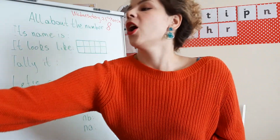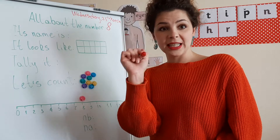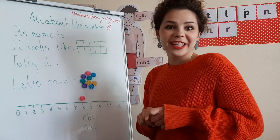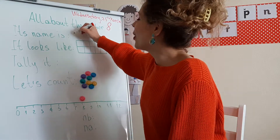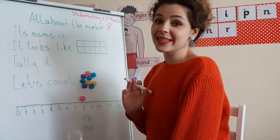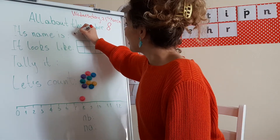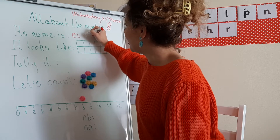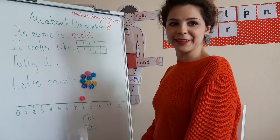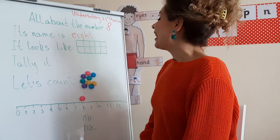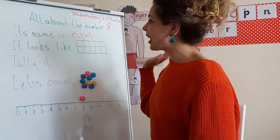So number eight — here it is. Please trace it many, many times. It can be very tricky to write the digit, the numeral. And what's even trickier is writing the word — the word looks nothing like what it sounds. So I'm just going to write it: E-I-G-H-T, eight. Yes, this is how you write the word 'eight.'